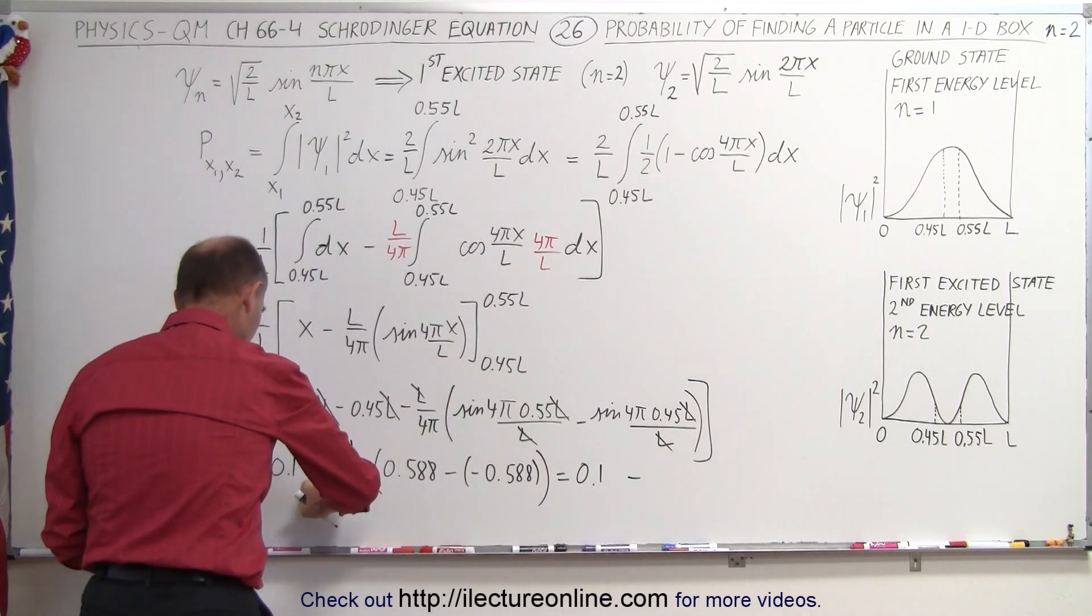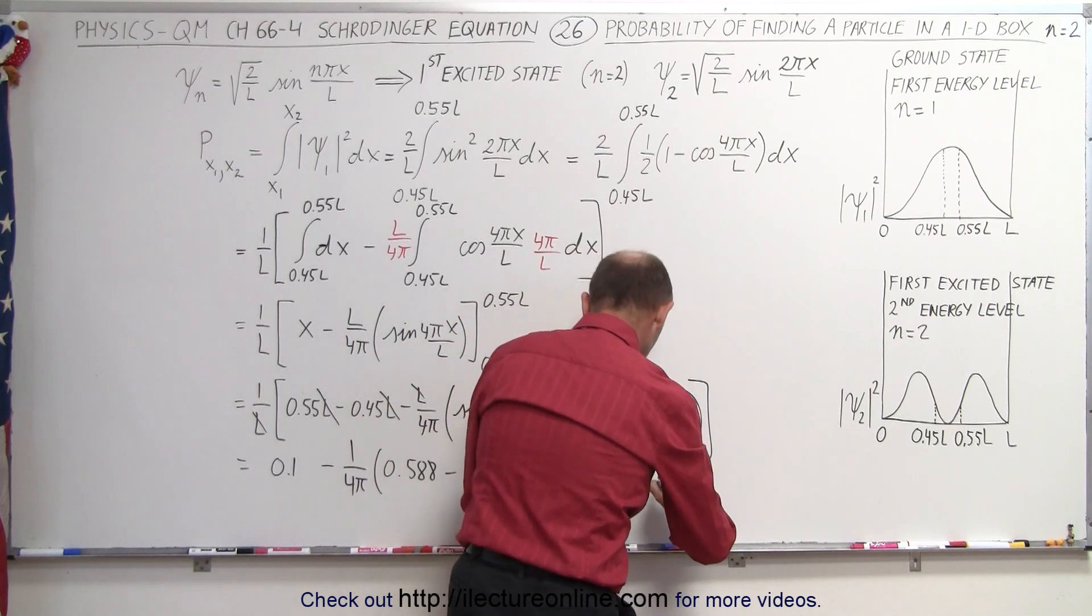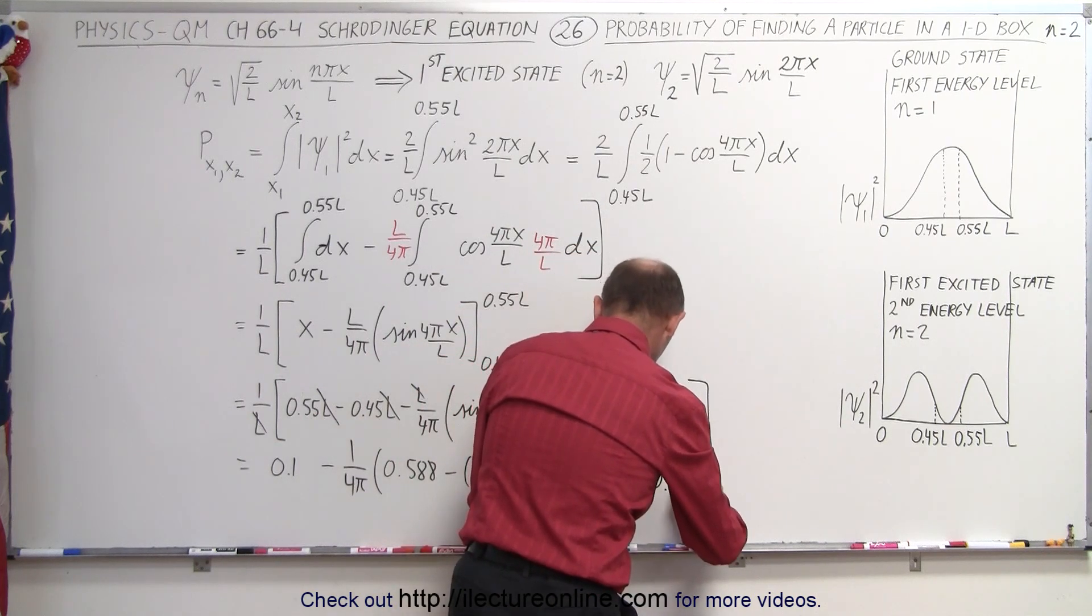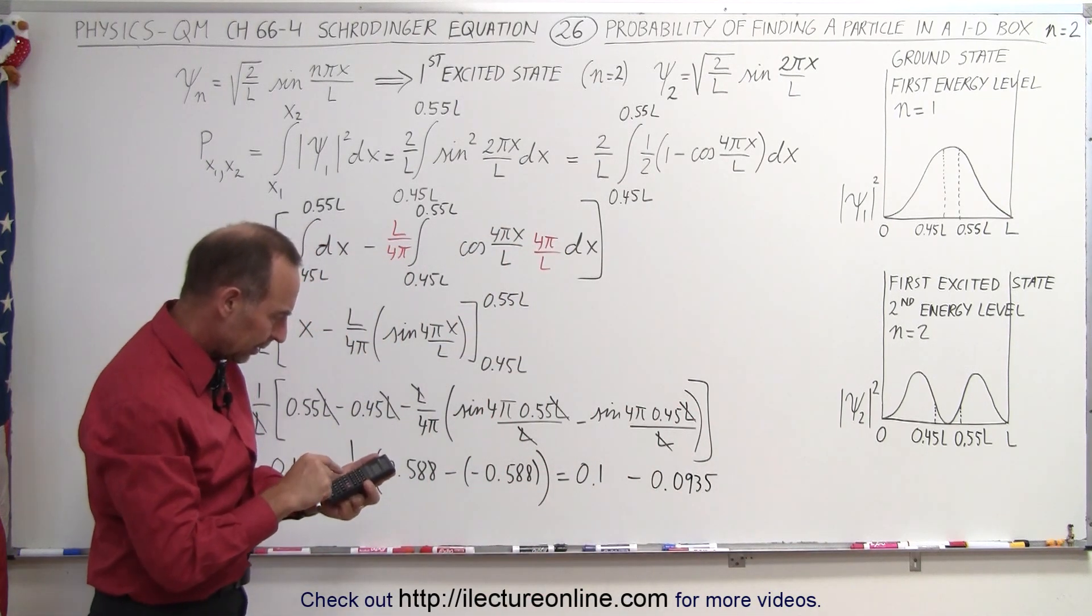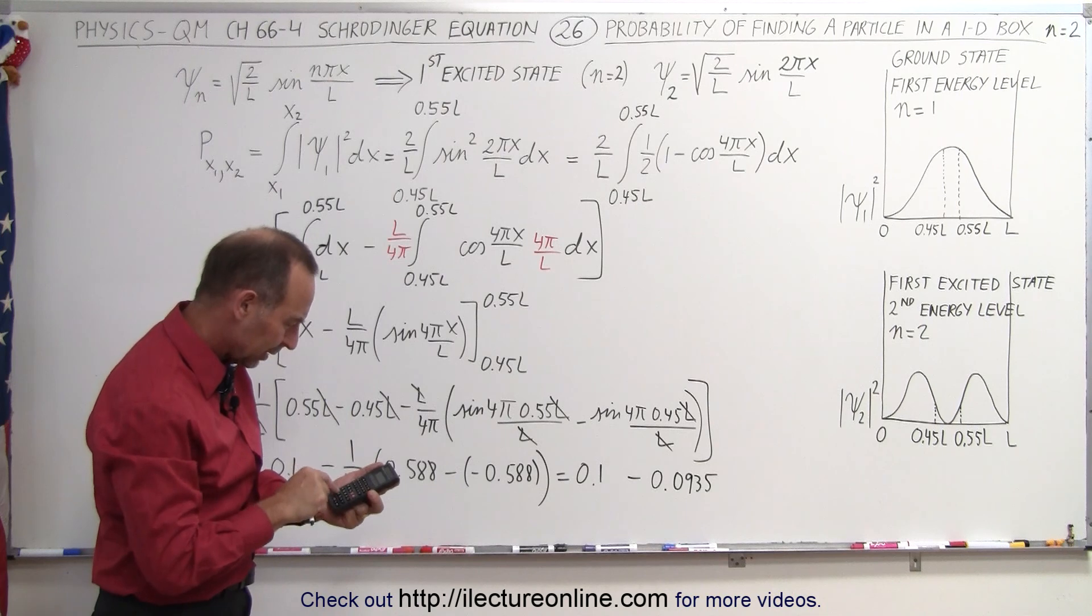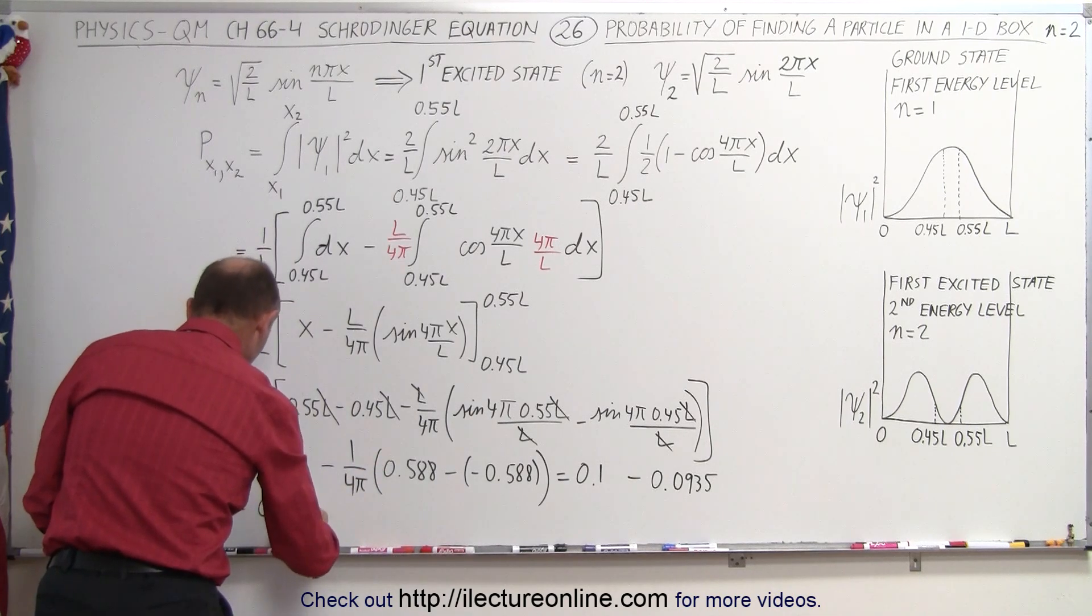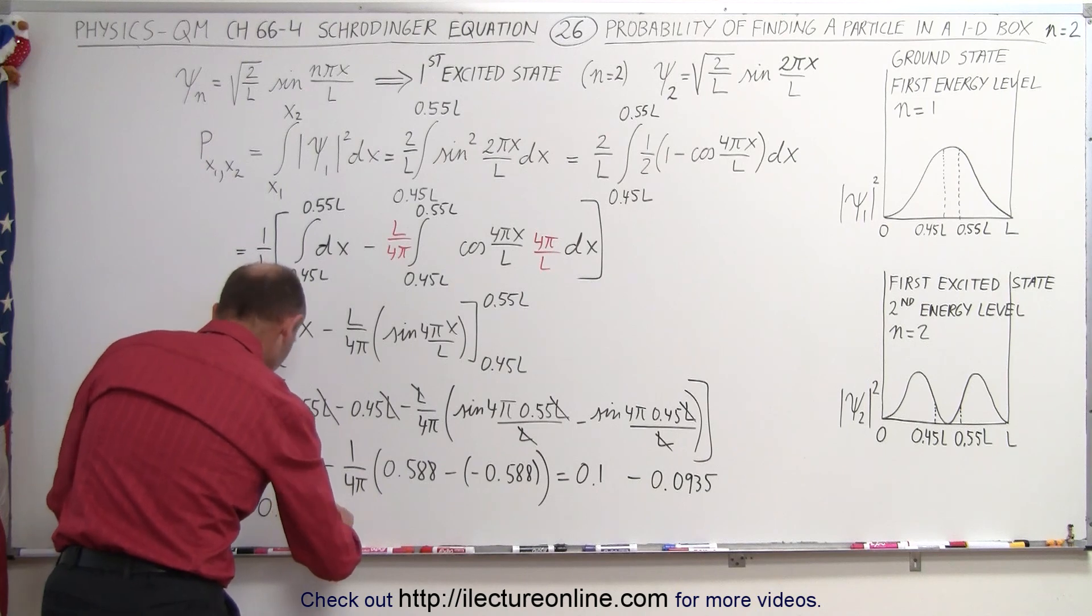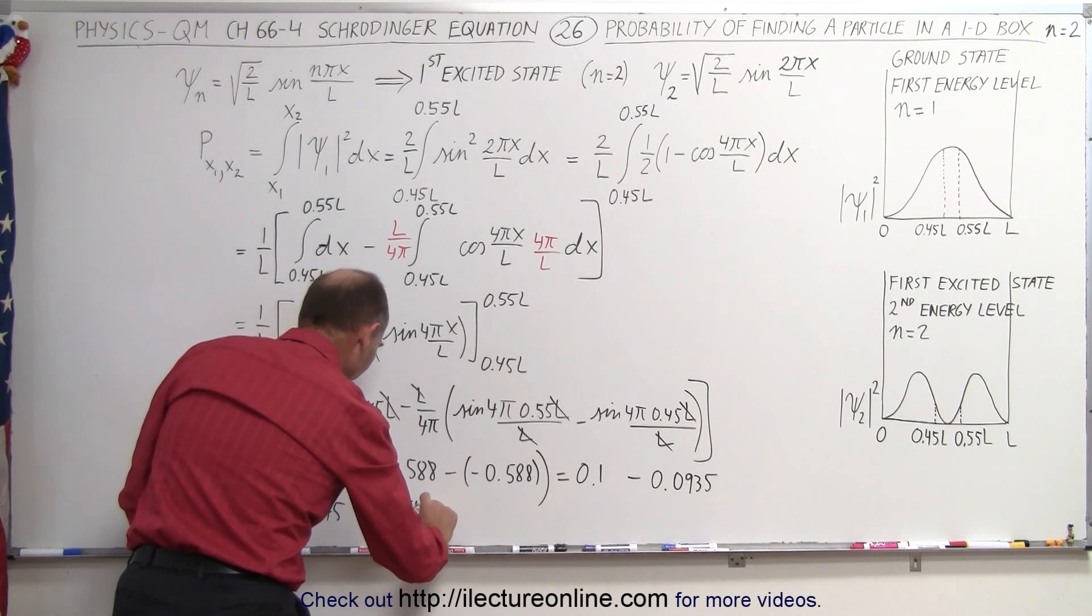I got to be careful here. The L is gone so minus 0.1 minus 0.0935. So subtract that from 0.1 and we get this is equal to 0.00645 or 0.645%.